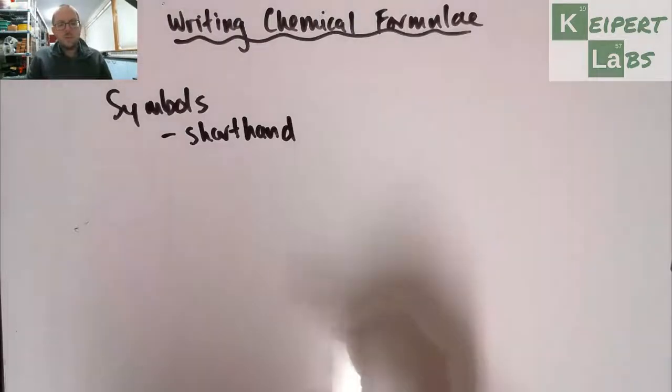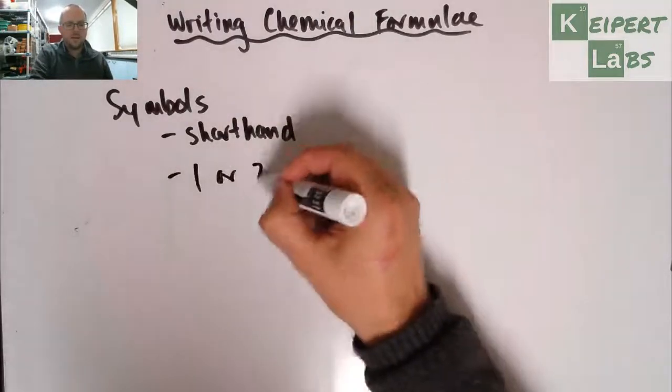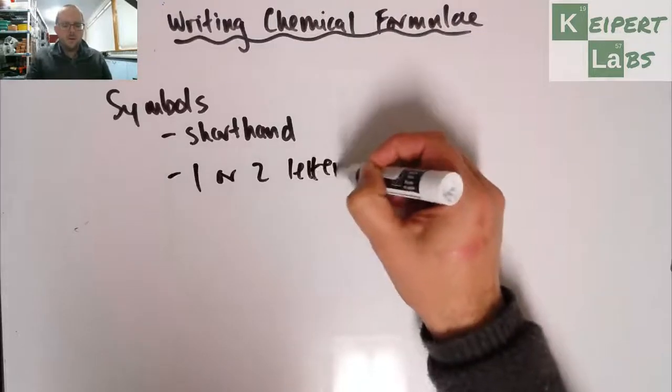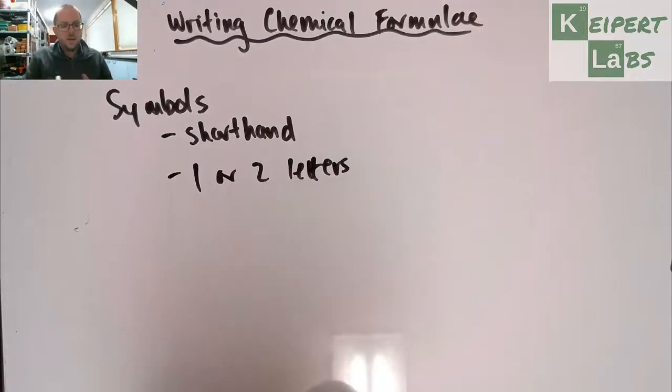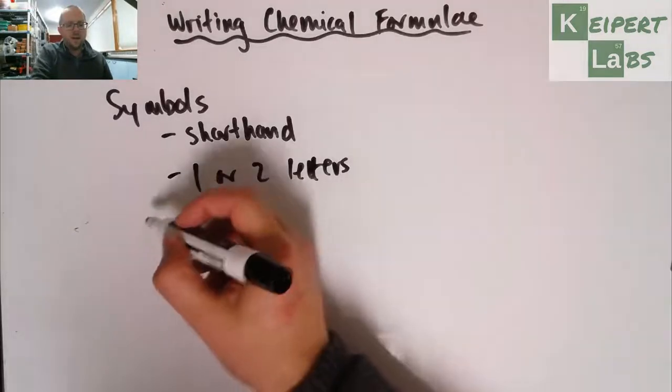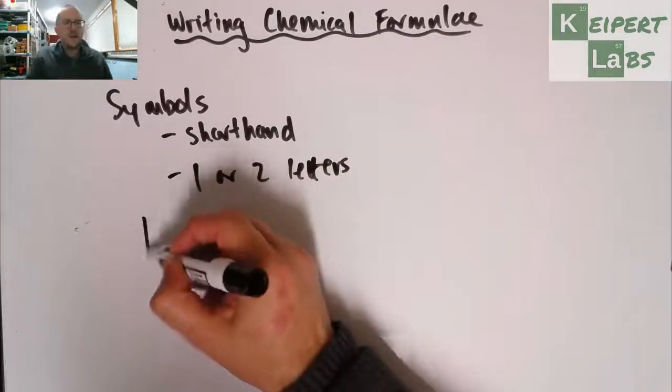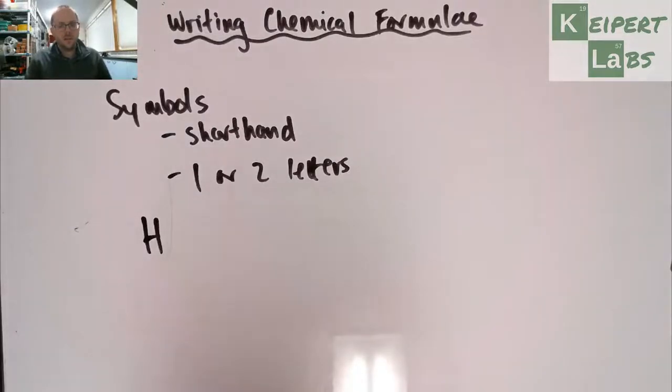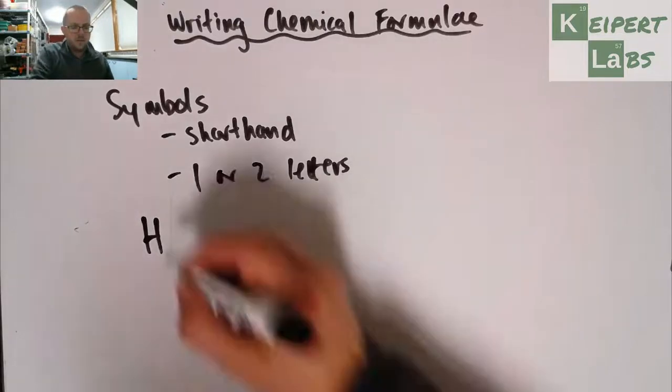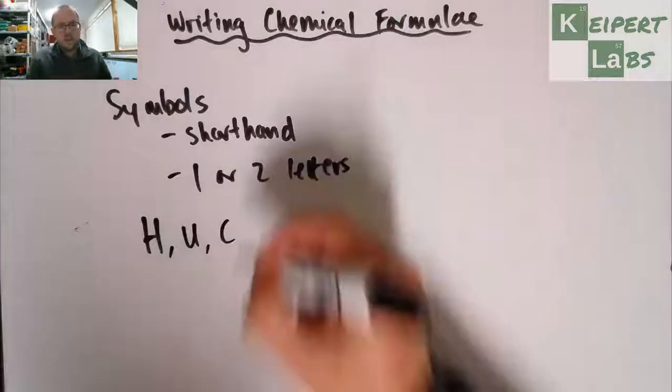And so we get different types of symbols. They're mainly one or two letters, they will always be one or two letters for ones that have been officially recognized. And so what we have, we've got some symbols that are just one letter, which is just the first letter of their name. So these are some examples I'll go through. So just the first letter of their name. So H for hydrogen, U for uranium, C for carbon. All right, so first letter.